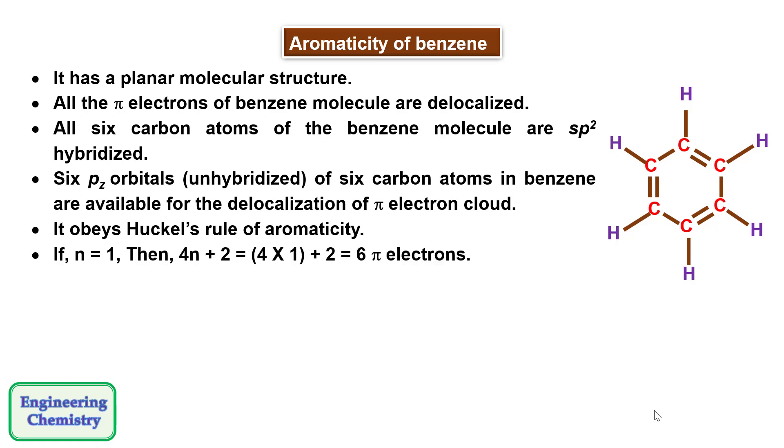For example, if we consider n equals one, then 4n plus 2 comes out to be six pi electrons. We know that all those molecules which possess unsaturation where all the atoms are sp2 hybridized and they contain 2, 6, 10, 14, 18 and so on number of electrons, they are aromatic compounds.